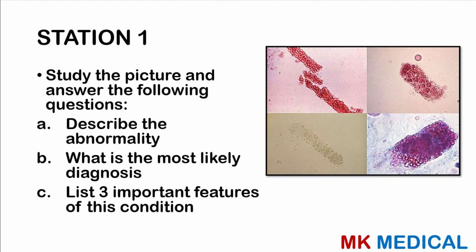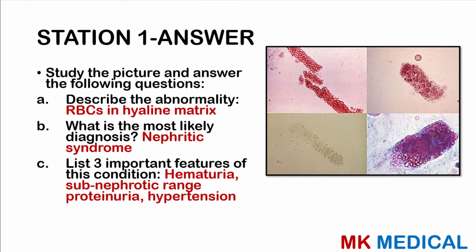So here comes the answer. Most likely these are red blood cells in the hyaline matrix — as we can see, these appear reddish. There are different types shown so that if they bring you whichever image it may be, you still have an idea of what is going on. These are red blood cell casts in the hyaline matrix.